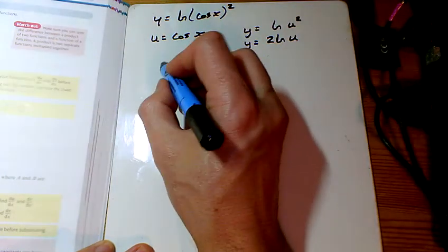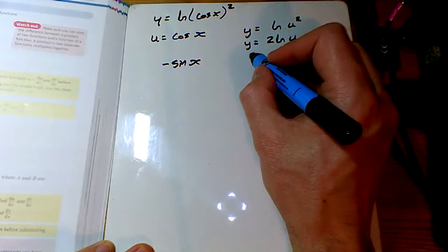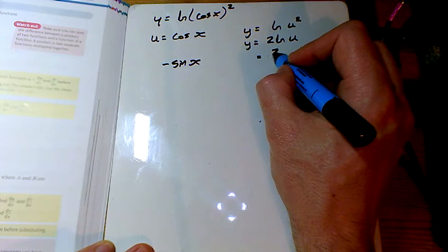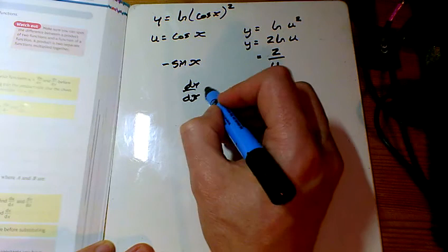So now we can differentiate. Cos goes to a minus sine, ln u goes to 1 over u, so we've got 2 over u. And we multiply these two things together to get what dy by dx is.